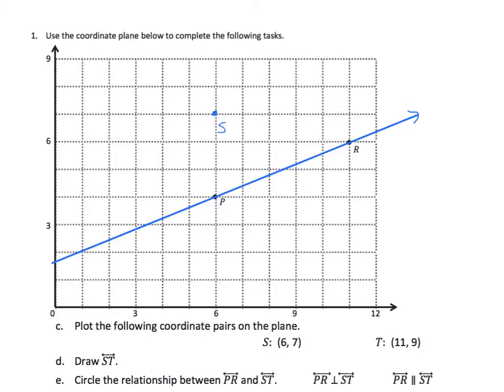And we have to find 11, 9. We'll find 11, we'll go up to 9, and we'll label that T. Notice that P and S and R and T are on the same coordinate as far as the x goes, which makes our job a little bit easier.